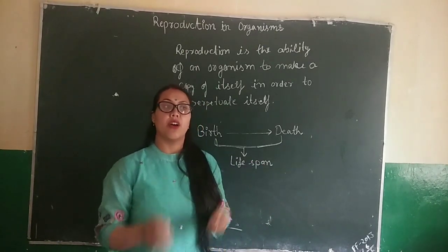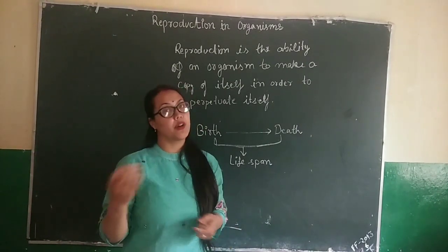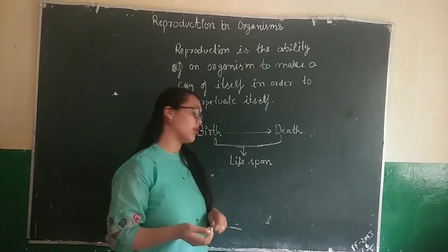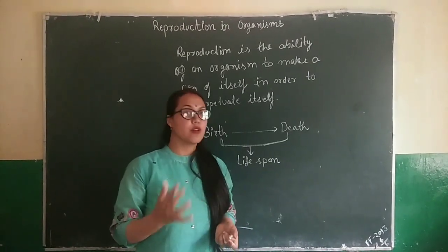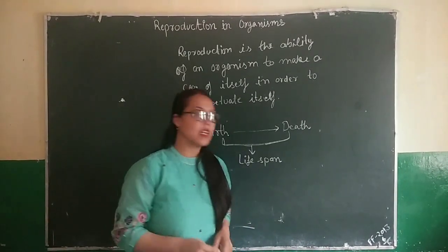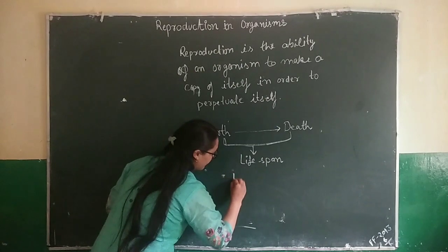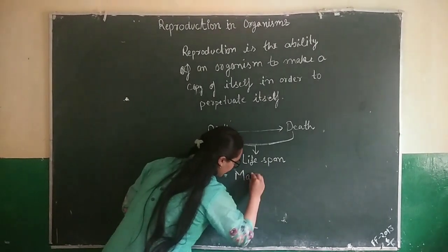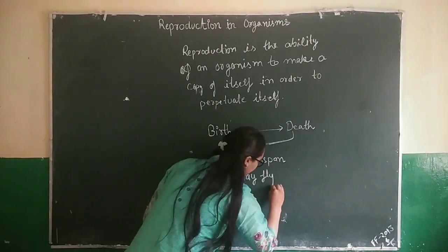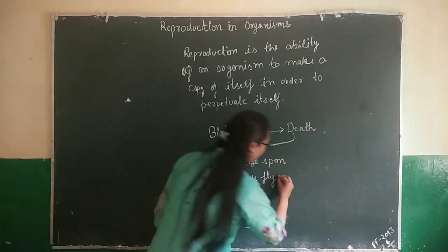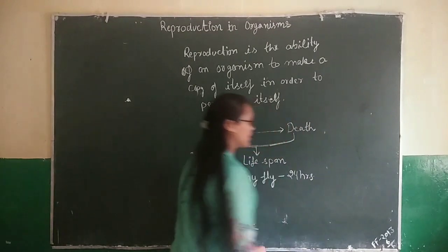There are some insects whose life span ranges from a day to a few months or a few years. There are many animals and plants whose life spans are also very variable. Plants have longer life spans. For example, there is one insect known as the mayfly, which has a life span of 24 hours — that is, one day.